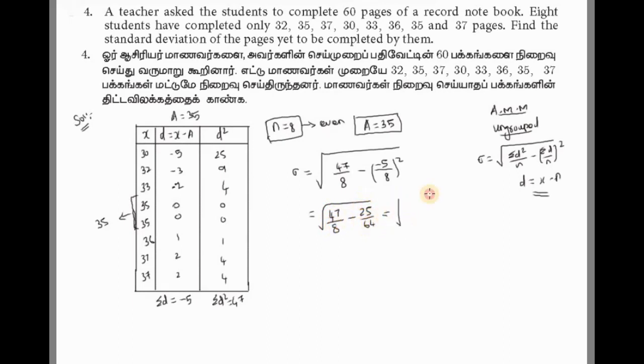Now simplify. This equals root of 47 by 8 minus 25 by 64. Let's find the LCM - it's 64. So 8 goes into 64 eight times. 47 times 8: 8 times 7 is 56, but 47 times 8 equals 376. So we have 376 minus 25 over 64.